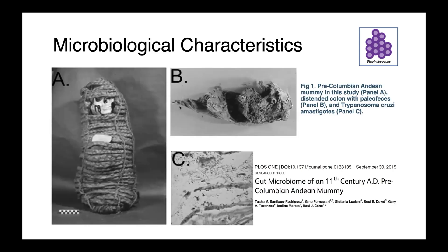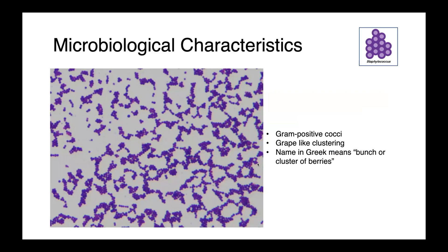Staphylococcus aureus has been with us for a long time. This was a study published in 2015 in PLOS One, where researchers investigated the gut microbiome of an 11th century Andean mummy. You can see the mummy in picture A. In picture B is some paleofeces — fecal material that had been preserved. And in C, you can see the presence of the Trypanosoma cruzi parasite. Interestingly, using metagenomic analysis, they were also able to identify Staphylococcus aureus. This is a gram stain of Staphylococcus aureus, and you can really easily appreciate the grape-like clusters of gram-positive cocci.